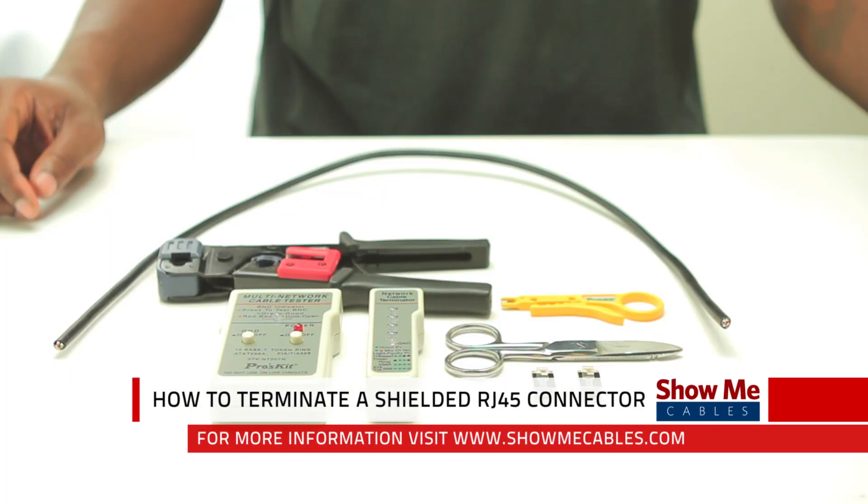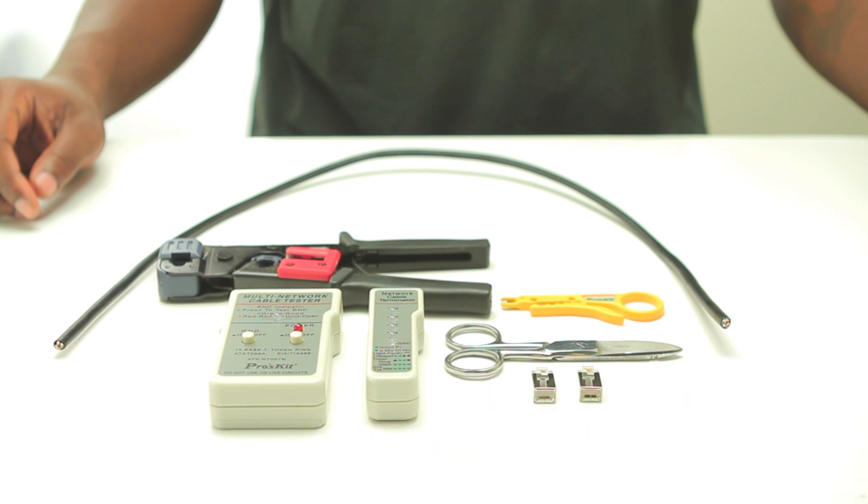Hi, this is Mark from ShowMeCables and today we are going to learn how to terminate a shielded RJ45 connector. For today's project I'm going to need Cat5e shielded cable, two shielded RJ45 connectors, technician scissors, rotary strip tool, crimp tool, and a tester.